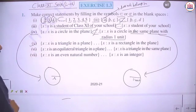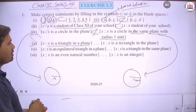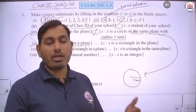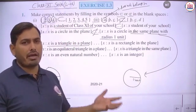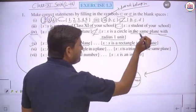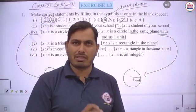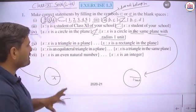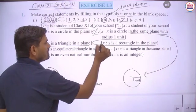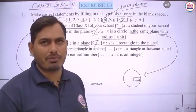Fifth part: X is a triangle in a plane, and the second set is X is a rectangle in a plane. Since rectangles and triangles are different figures, no rectangle belongs to the set of triangles. Therefore, this is not a subset.